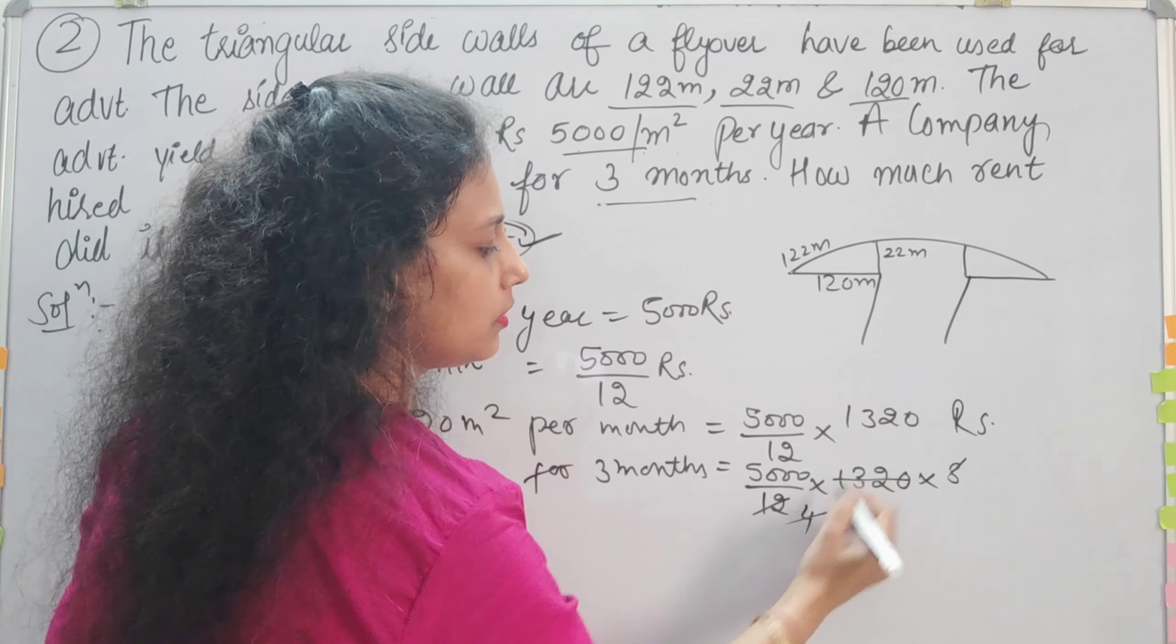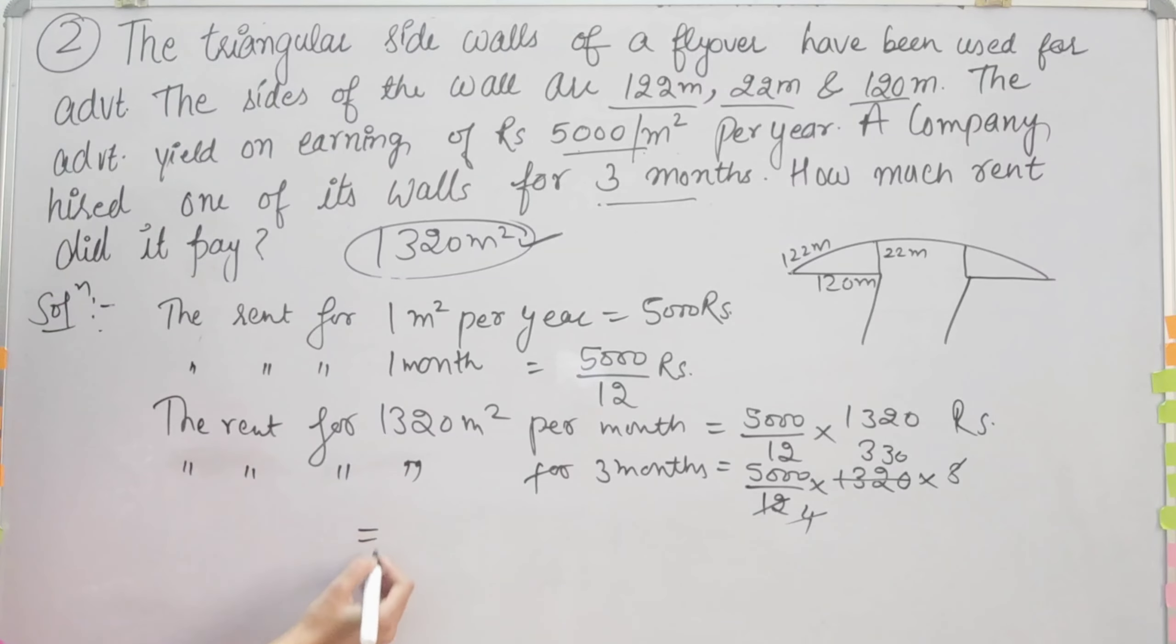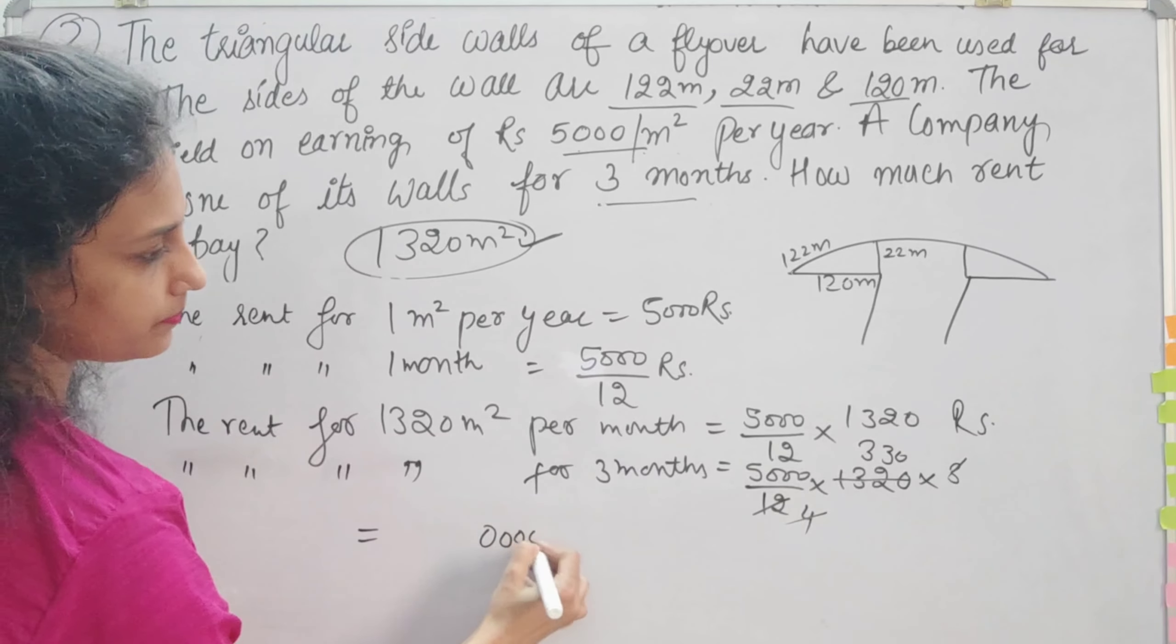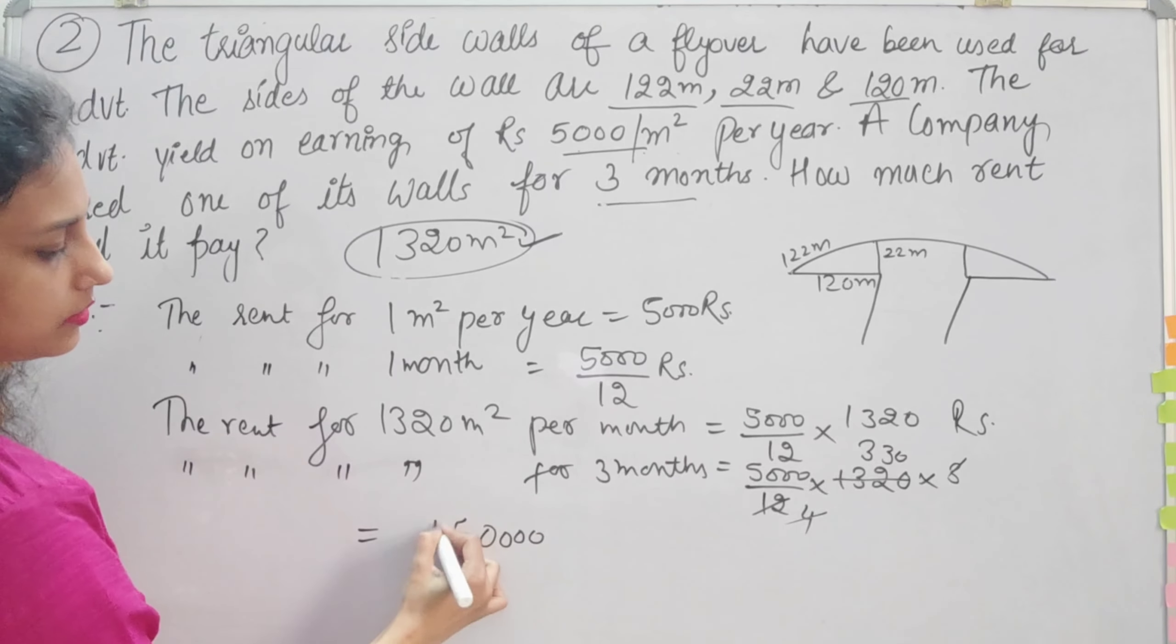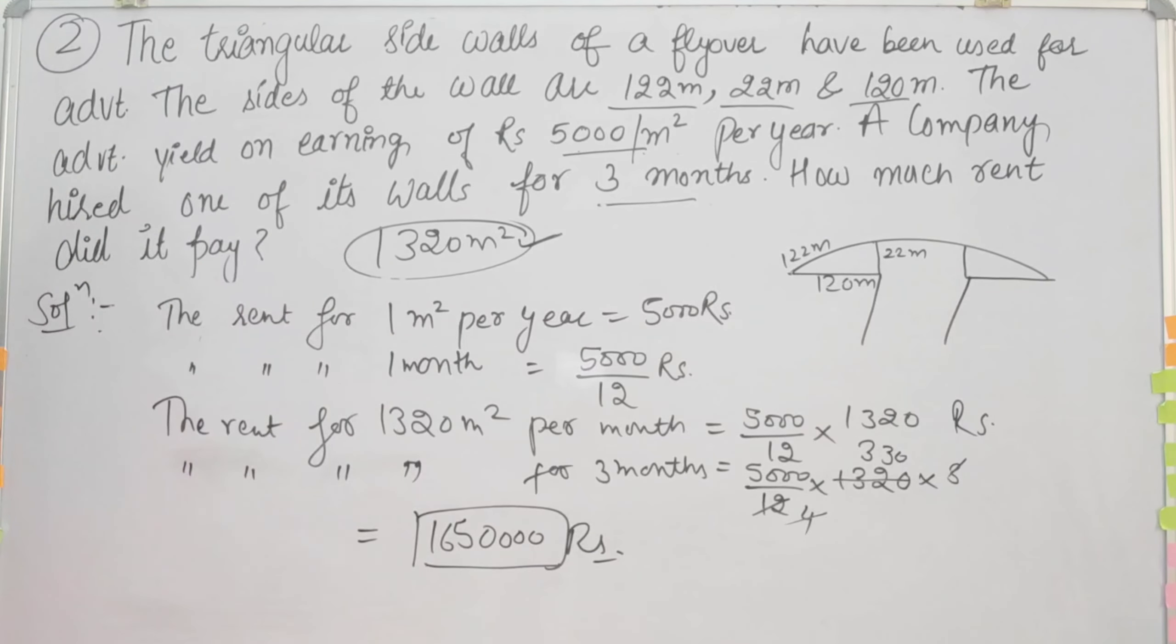Three times four is 12, again three times four is 12, three times four is 12, and zero. Now we will calculate this: 16,50,000 rupees.